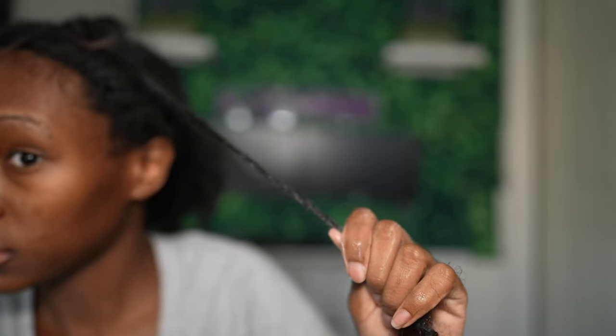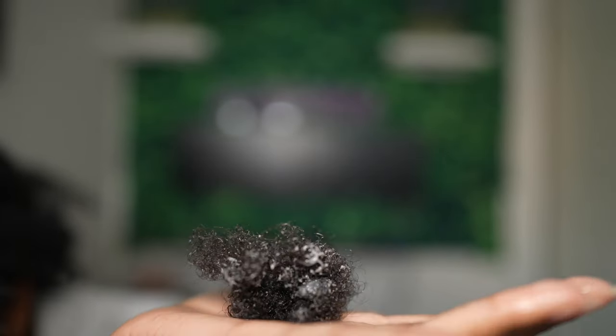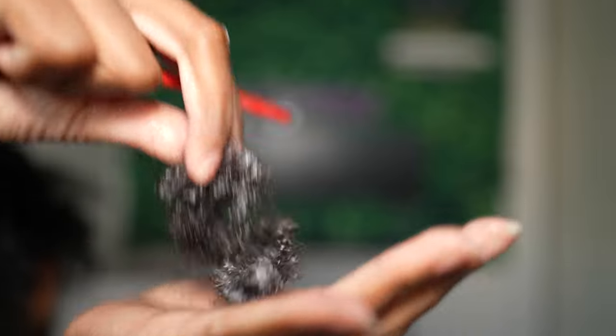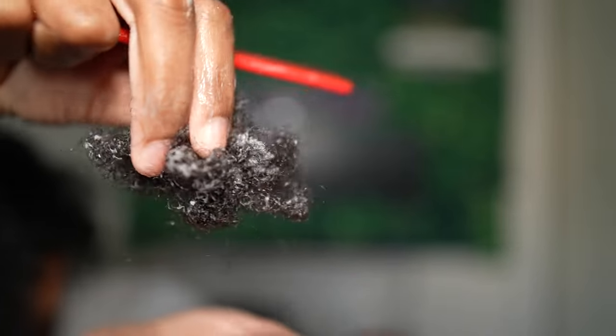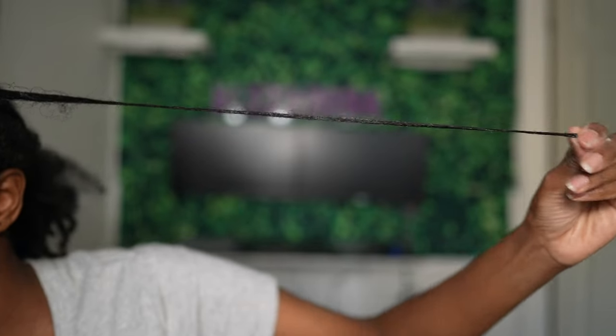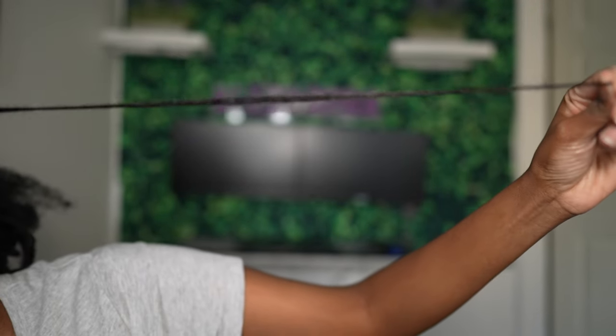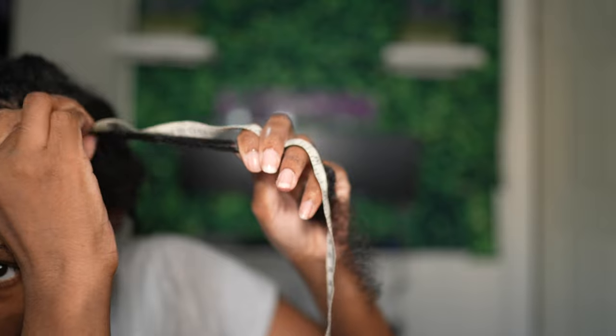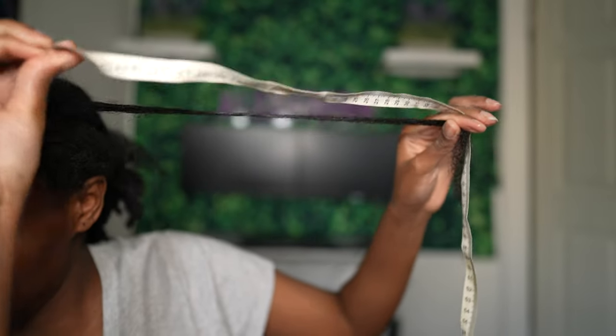Then I just comb through the lock and get the rest of that loose hair out - this is all of the hair that I lost from that one lock. Here I am combing through it again, getting the rest of it, and I'm going to stretch it out and measure it for you all so you can see how long the hair is.